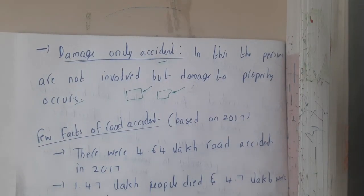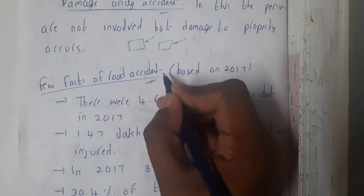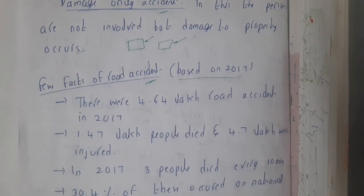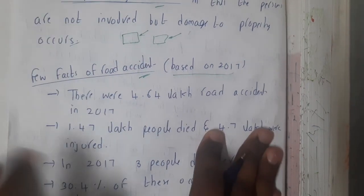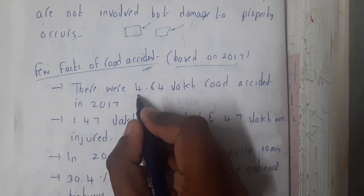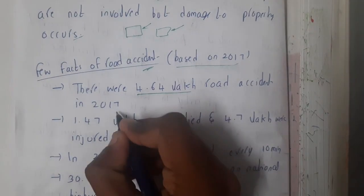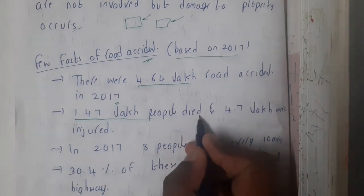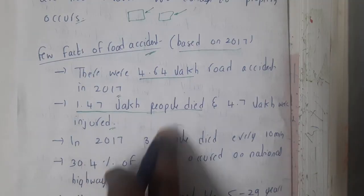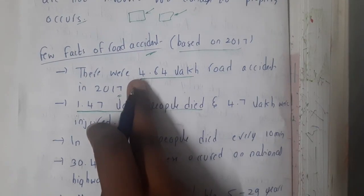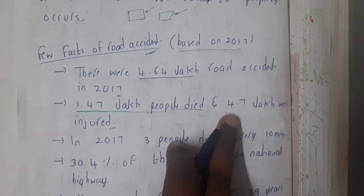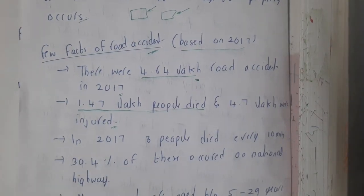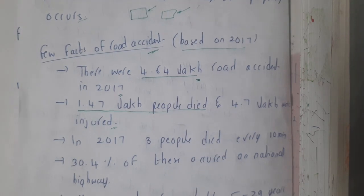Now let us go through some facts about road accidents. These values are based on 2017. There were around 4.64 lakh road accidents in 2017, among which 1.4 lakh people died and 4.7 lakh were injured. The number of injured is higher than the total accidents because multiple people can be involved in a single accident.